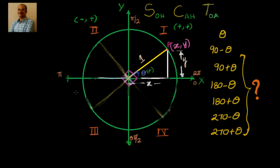To find out this, let's do a simple step. I have taken the same unit circle. We have the angle theta that is made by the point X, Y. Now we are interested in 90 plus theta. What I will do is I have drawn a perpendicular to this, so that the total angle is equal to 90 plus theta.